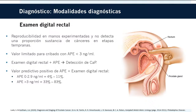La prueba de antígeno prostático mejora el valor predictivo positivo del examen digital rectal: entre el 4 y el 11% en hombres con antígeno de 0 a 2.9 ng/mL, y entre el 33 y el 83% en hombres con antígeno de 3 a 9.9 ng/mL o más. En general, cuando ambas pruebas se utilizan en conjunto para la detección del cáncer, sus tasas de detección son aún más altas que si se utilizaran de manera individual; por lo tanto, se recomienda usarlas de forma conjunta.